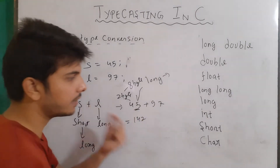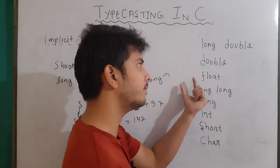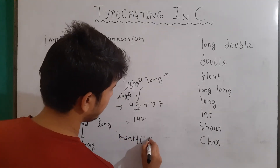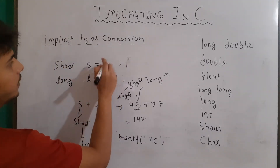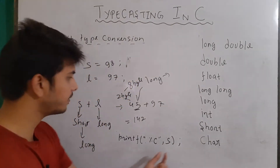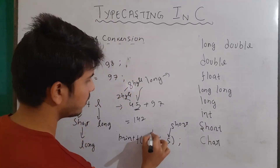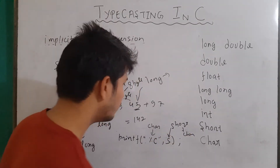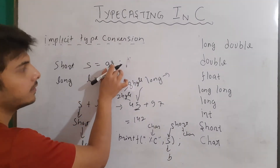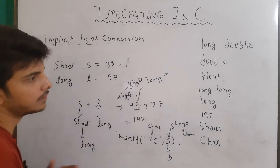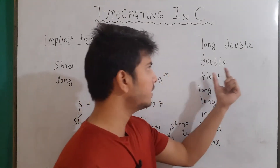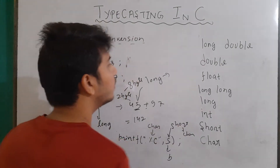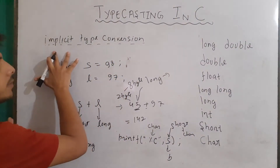Remember this is not always the case. For example, if I write printf with %c and value s of short type, here the short is higher in the hierarchy but the format specifier expects character type. So this will be converted to character, and since 98 is the ASCII value of 'B', the output will be 'B'. In printf and other scenarios, the higher one can also be converted to the lower one. Everything is done by the compiler itself, which is why it is called implicit type conversion.